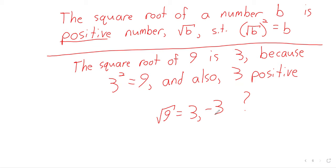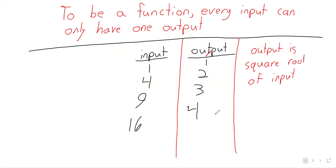If we let the square root of nine be both three and negative three, this rule is no longer a function — the input nine would have two different outputs.